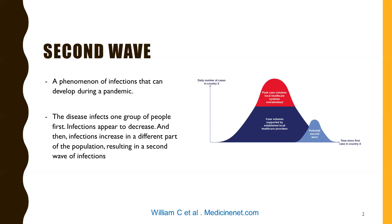The degree of the second wave — whether it can be a larger or smaller wave — has been studied. This is a phenomenon of infection that can develop during a pandemic: the disease infects one group of people first, the infection then appears to decrease, and then increases in different parts of the population, resulting in a second wave.